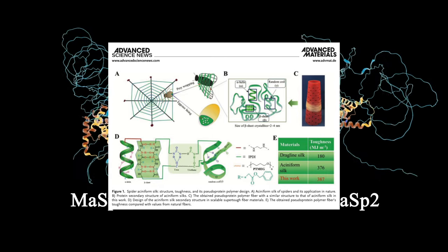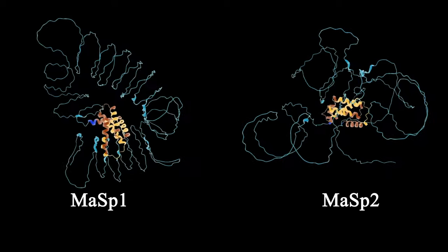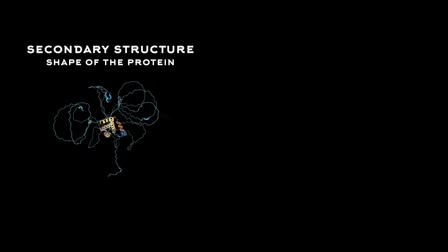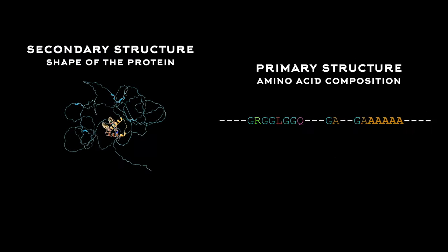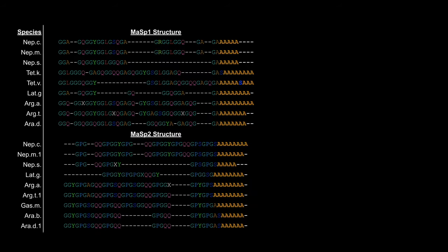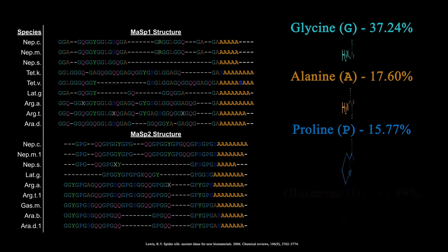The secondary structure of the fully folded protein gives the silk its strength and elasticity. This is in turn derived from the primary structure, the amino acids that make up the peptide chain. There are common sequences throughout the various types of silk. Dragline silk is mostly composed of the amino acids glycine, alanine, proline, and glutamine.